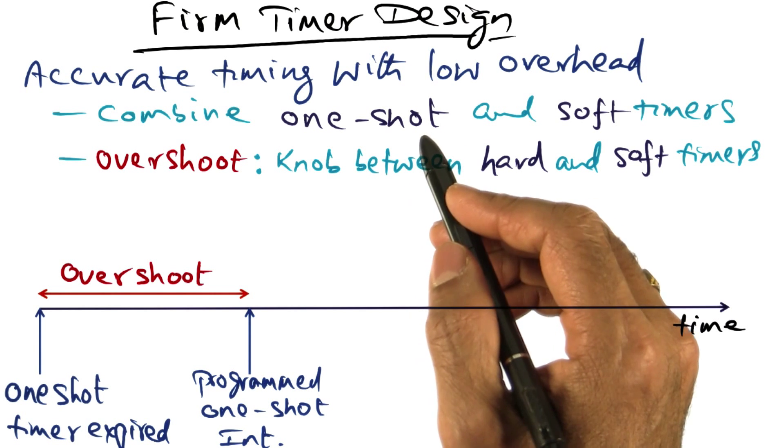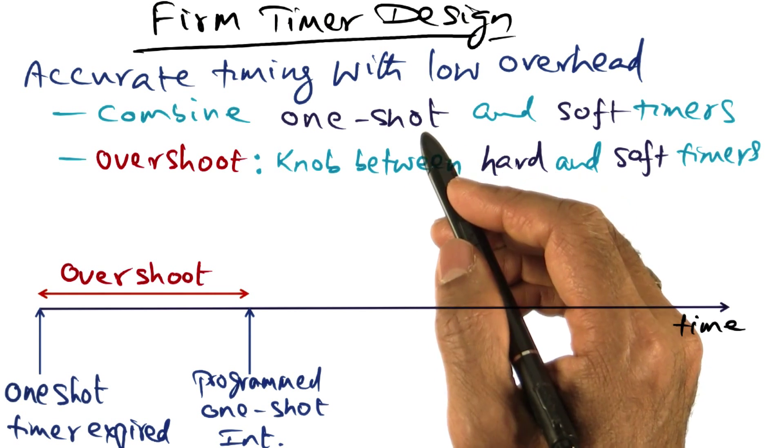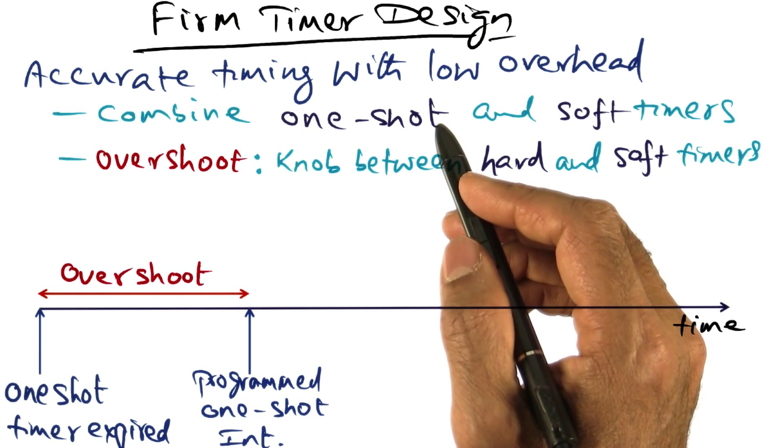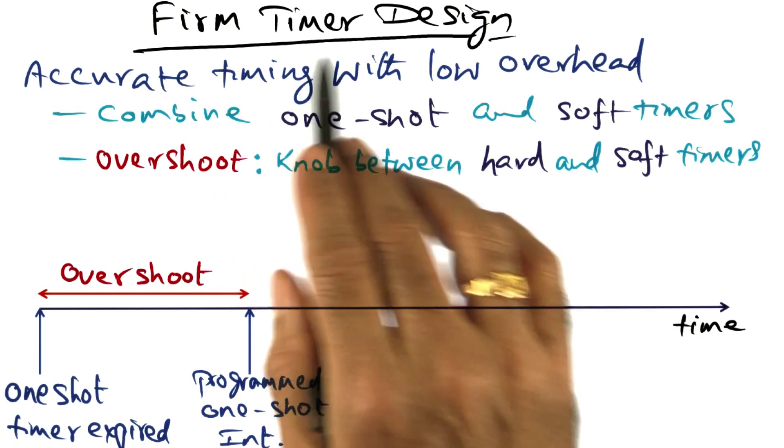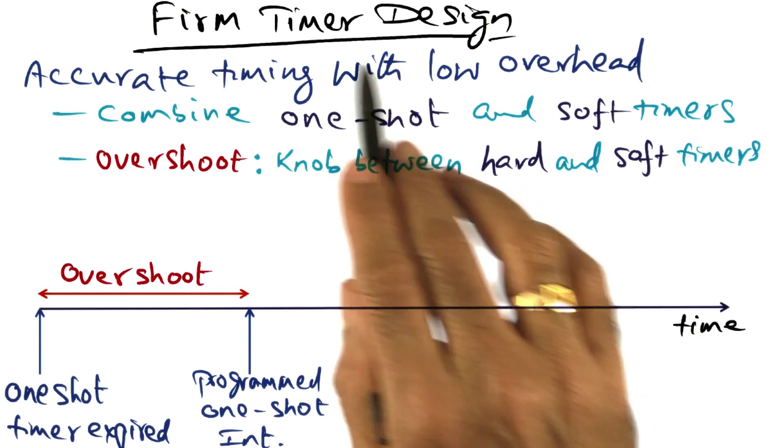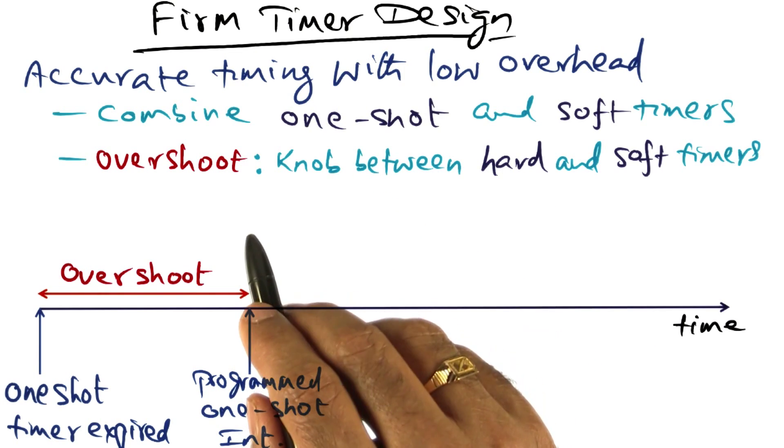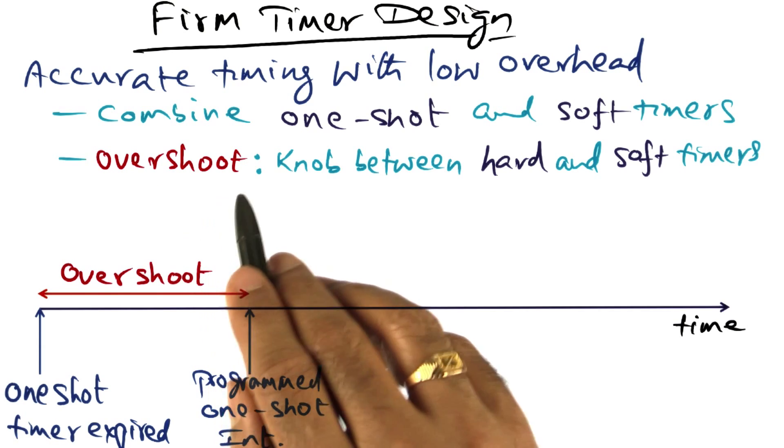The con with the one shot timer is that there is overhead associated with processing one shot timer events as well as reprogramming them. So for that reason, what they do in TS Linux with the firm timer design is to have a knob called the overshoot knob.